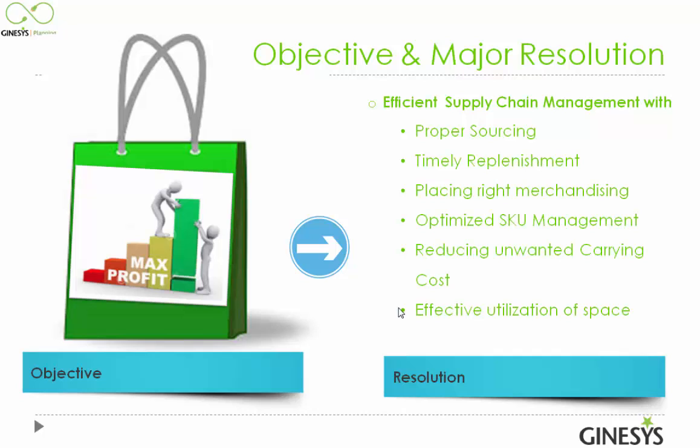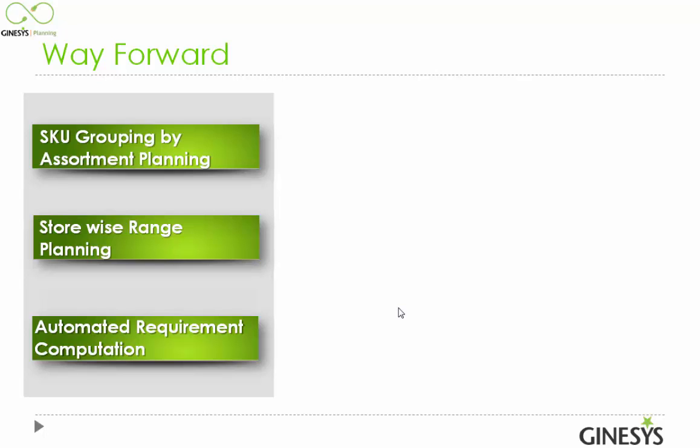The way forward for effective supply chain management in operational areas would be SKU grouping. In the Indian retail industry there are diversified SKUs available — depending on the store format, it could be from 5,000 SKUs to 20,000 SKUs moving in different stores across different formats. So there is a requirement to group those SKUs under assortments so that planning can be done properly.